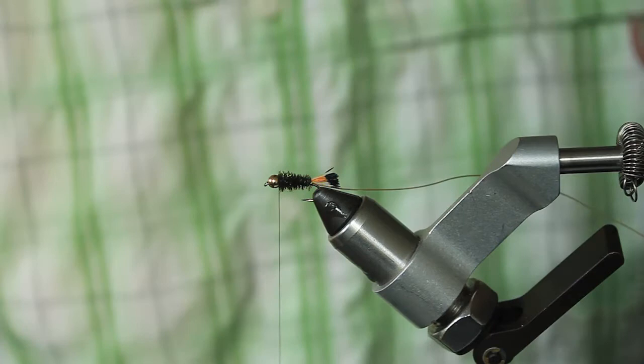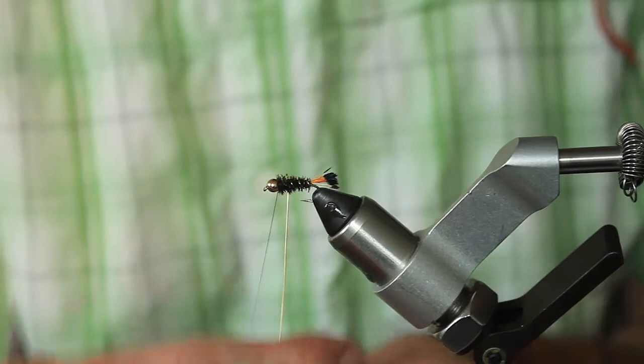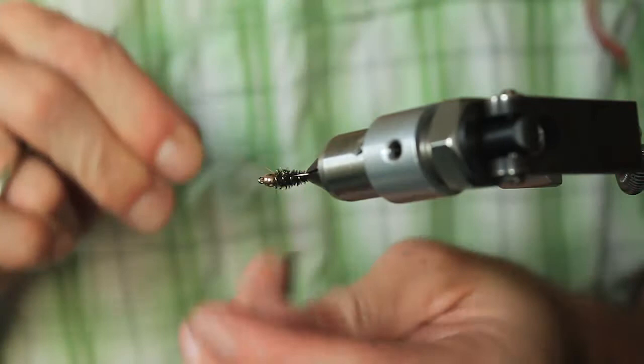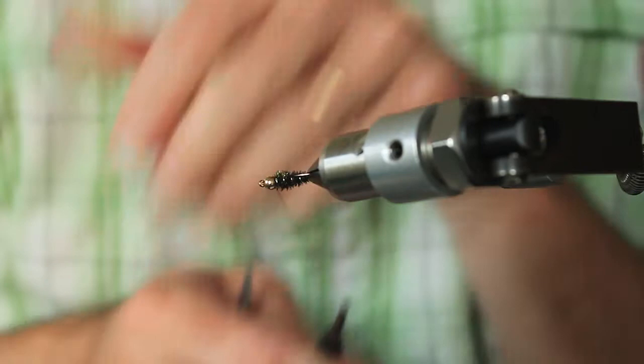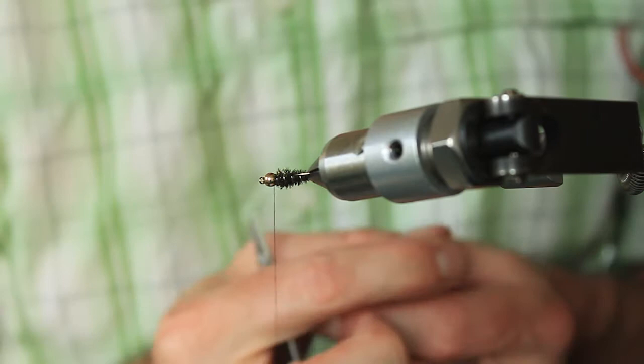The next step is going to be our medium wire. Open spiral wraps, three to four for our size 12 nymph. What I'm going to do is rotate a little bit there so I can get a counter wrap. And at this point, you can helicopter your wire off, making a smooth transition there and not dulling your scissors.